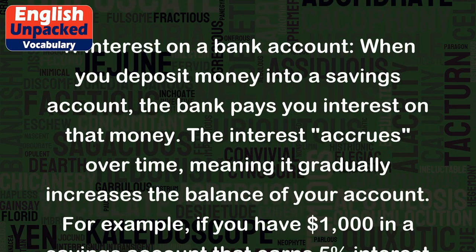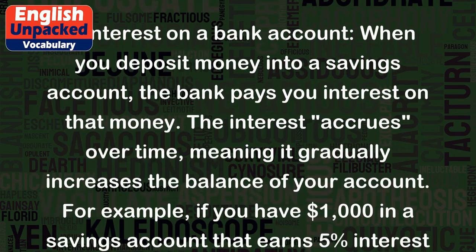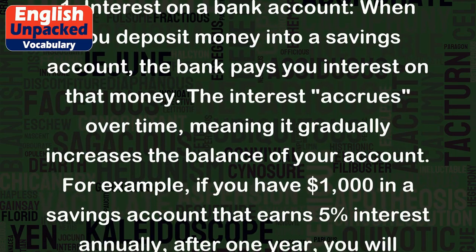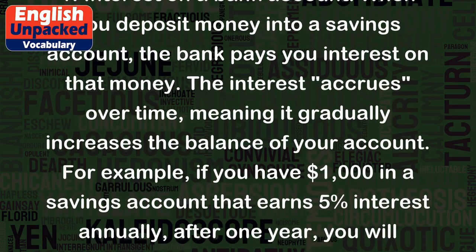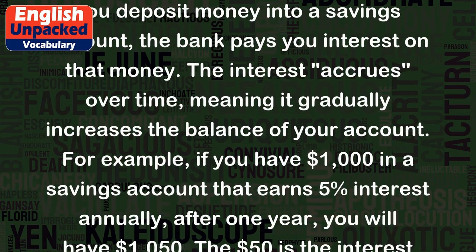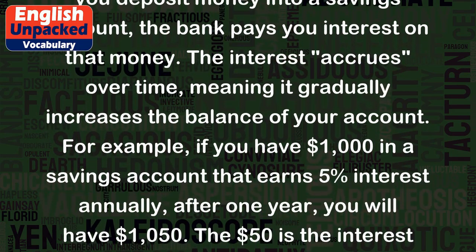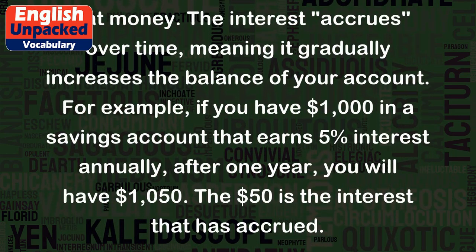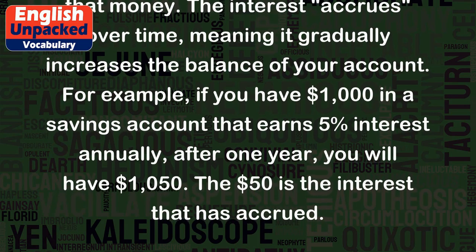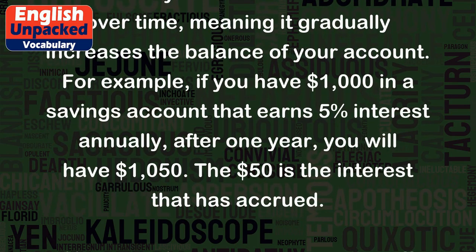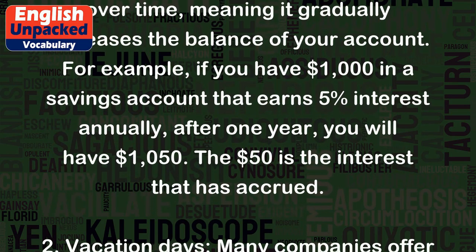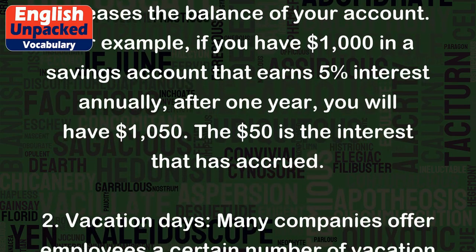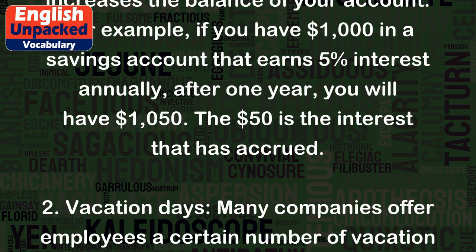For example, if you have $1,000 in a savings account that earns 5% interest annually, after one year you will have $1,050. The $50 is the interest that has accrued.